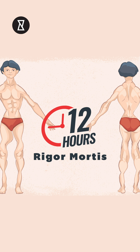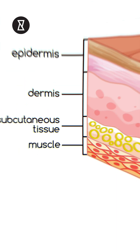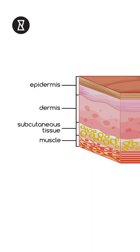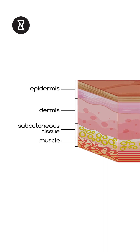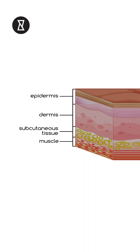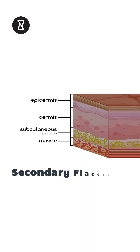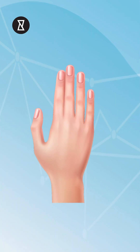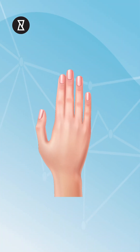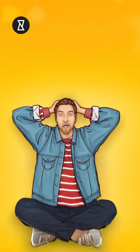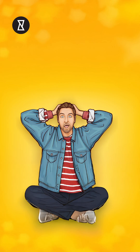And then, surprisingly, things start to reverse. The continued chemical changes occurring in the body will cause tissue to decay and the muscles to loosen. This process is called secondary flaccidity. During this time, the skin will shrink, making us believe that the hair and nails are growing. Quite a miracle of nature, isn't it?